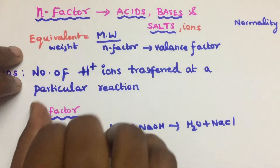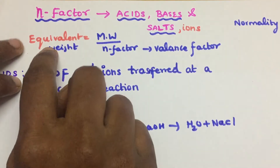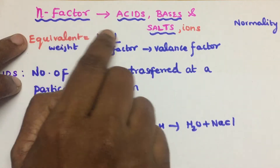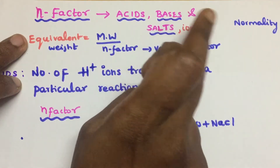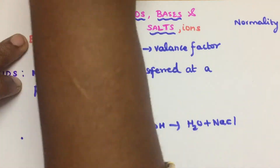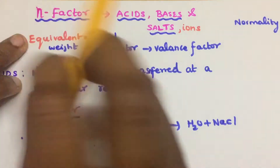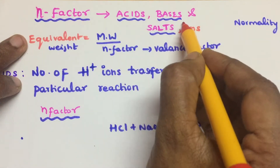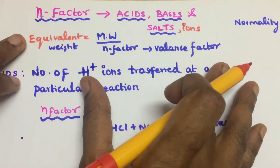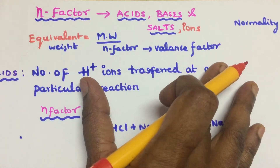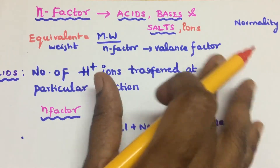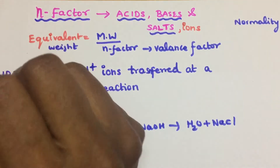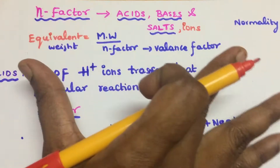Hello students. In today's session we are going to study about the N-factor — how to find N-factor for acids, bases, salts, and also for a few ions. How to find N-factor for redox reactions, for oxidation and reduction. This is very simple and easy; you can easily understand.